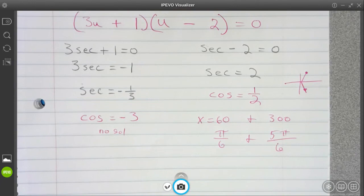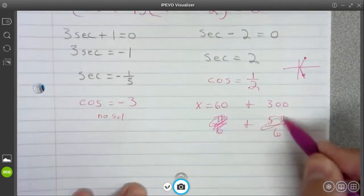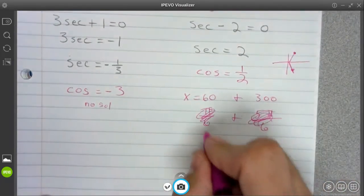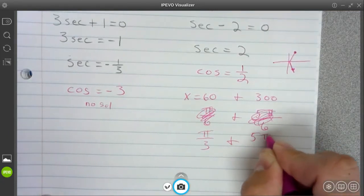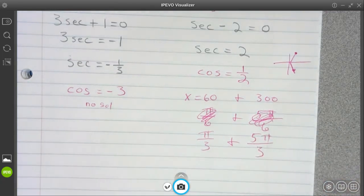No, no, no, no. Make these 6s a 3. Gosh, that was embarrassing. I'm sorry, guys. Pi over 3 and 5 pi over 3. Whew. That's better. All right.